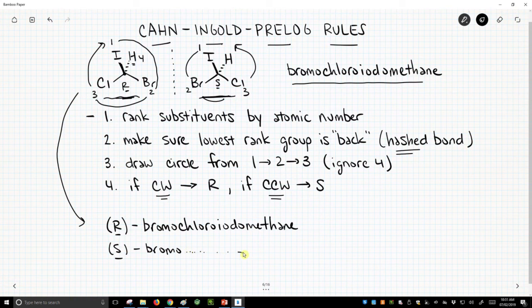So now we have the Cahn-Ingold-Prelog rules give us a means of distinguishing between two isomers. These are called stereoisomers.